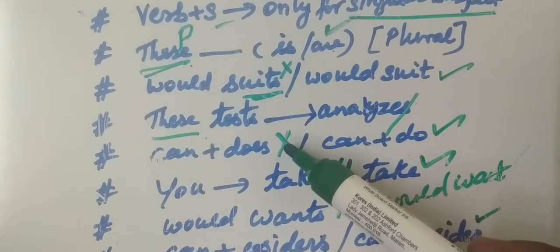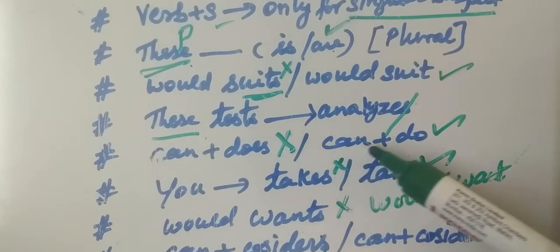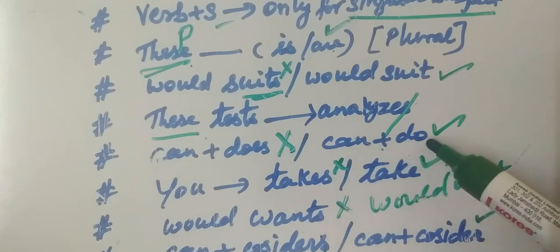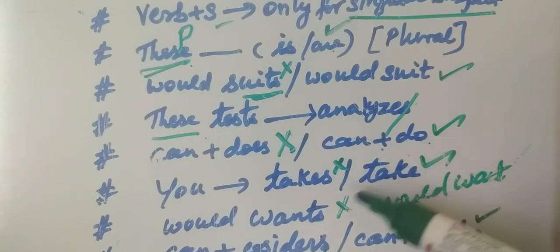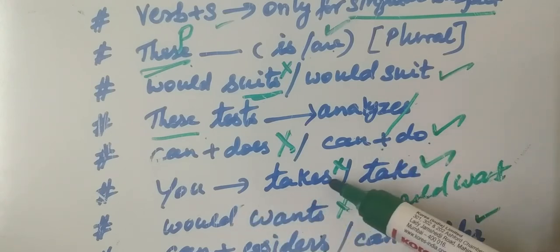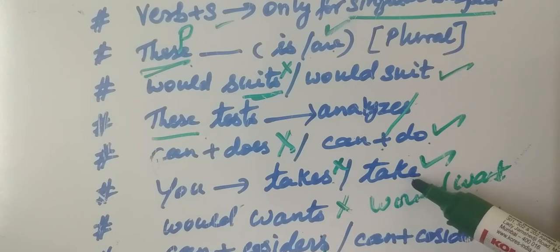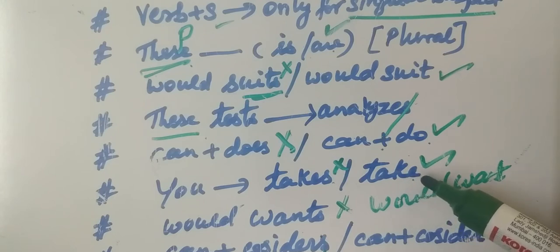Can plus 'do', not can plus 'does' — that is the correct one. Then 'you take' — 'you' is second person. For second person, use the base verb form.